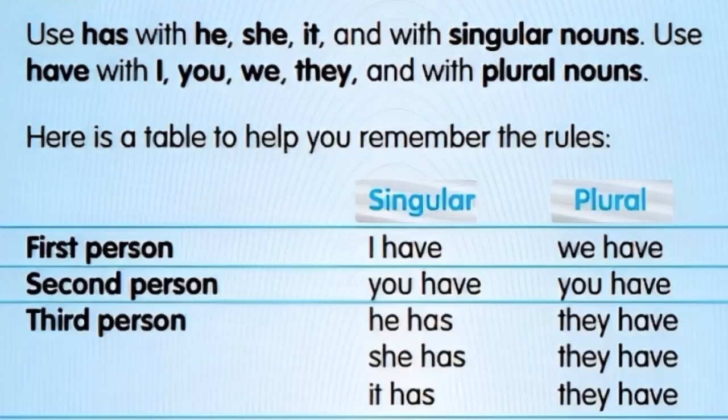Here is the table to help you remember the rules. First person singular: I have. Plural: we have. Second person singular: you have. Plural: we have. Third person singular: he has, she has, it has. Third person plural: they have.